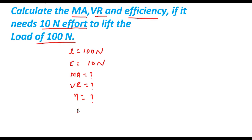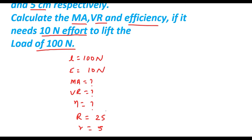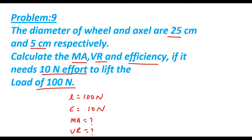The diameter of the wheel and axle are given: the wheel diameter is 25 centimeters and the axle diameter is 5 centimeters respectively. We need to calculate the MA, VR, and efficiency if it needs 10 newton of effort to lift a load of 100 newton.